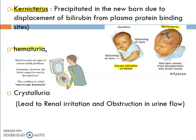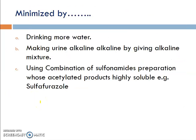Hematuria — that means urine containing blood. Crystalluria is another important side effect of sulfonamides, leading to renal irritation and obstruction of urine flow. To minimize crystalluria: drink more water, make the urine alkaline by giving an alkaline mixture, use combinations of sulfonamide preparations whose acetylated products are highly soluble. Example: sulfafurazole is used to prevent crystalluria.